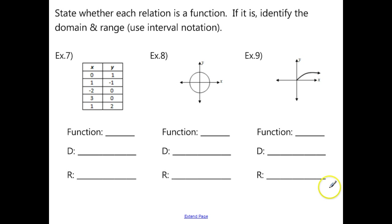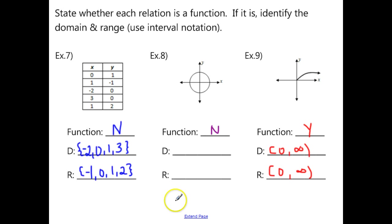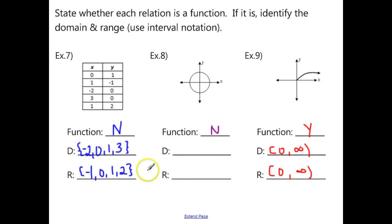For these last three examples: example seven is not a function. The domain is: negative 2, 0, 1, 3. The range is: negative 1, 0, 1, 2.